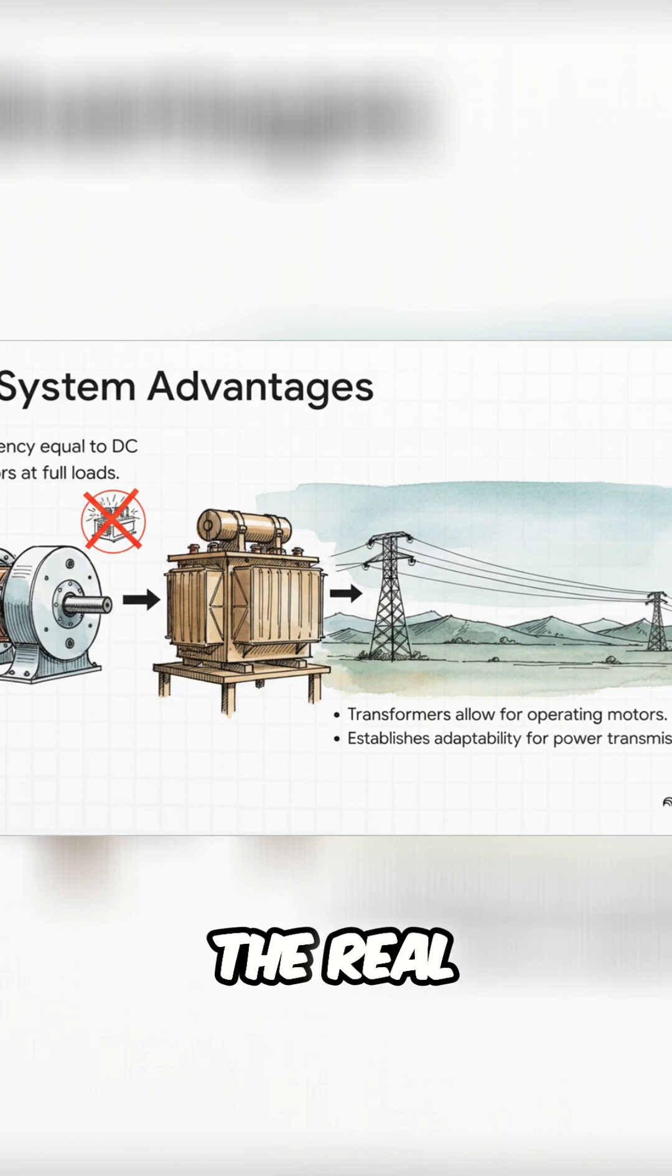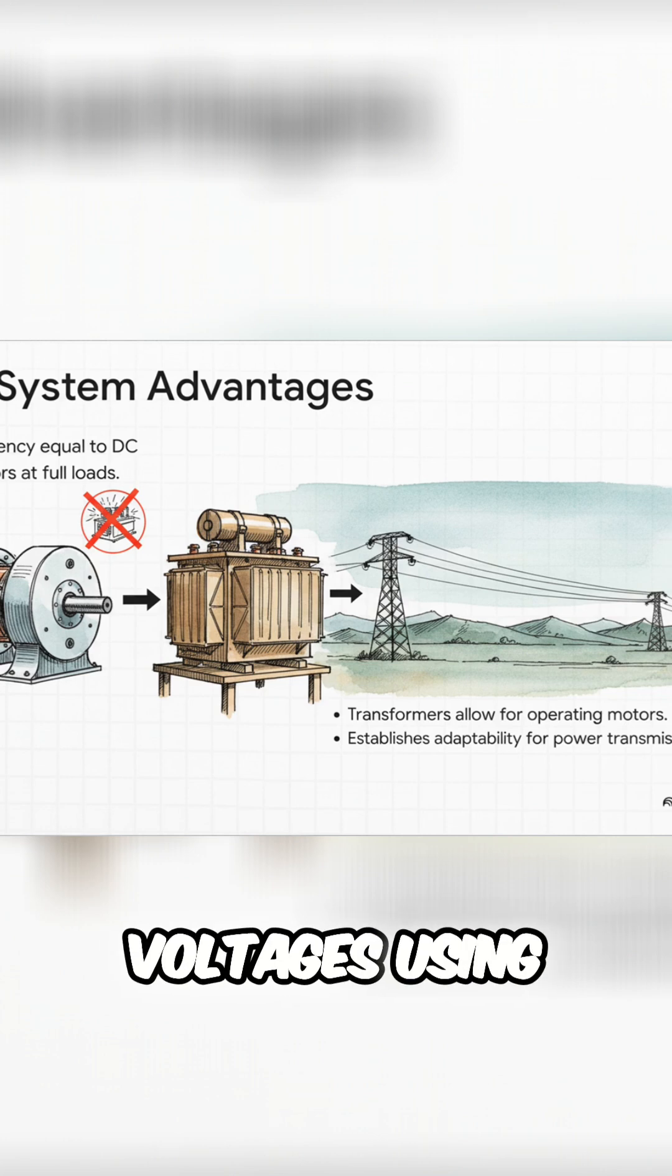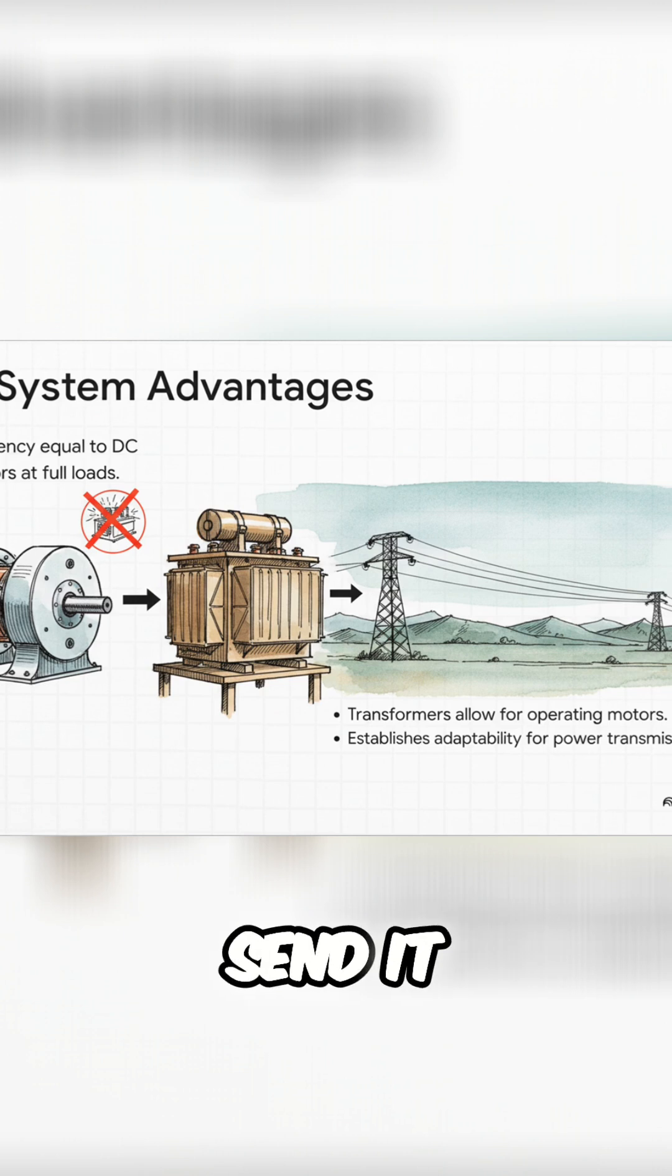But here's the real kicker. AC power could be easily ramped up to super high voltages using transformers. That meant you could send it hundreds of miles with almost no power loss, and then step it back down to be used safely in your home. This was the key. This is what built our modern world.